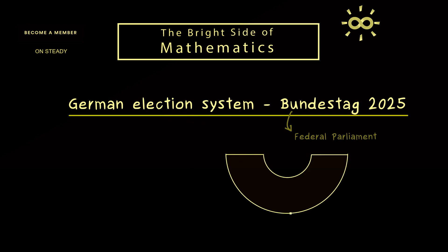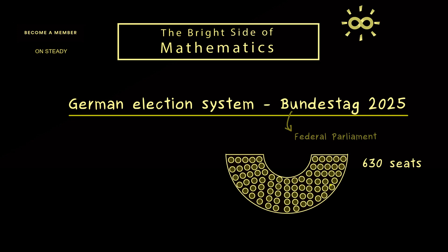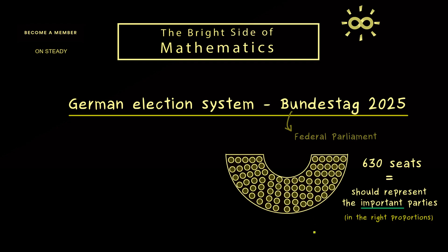The first thing you should note is that the Bundestag, this federal parliament, consists of 630 members, which are elected by the German people. So we have 630 seats which can be filled in. In the end, the result should be that the important parties are represented in the correct ratios in the Bundestag. So we have a proportional representation of the parties, and I will tell you soon what the attribute 'important' means here.